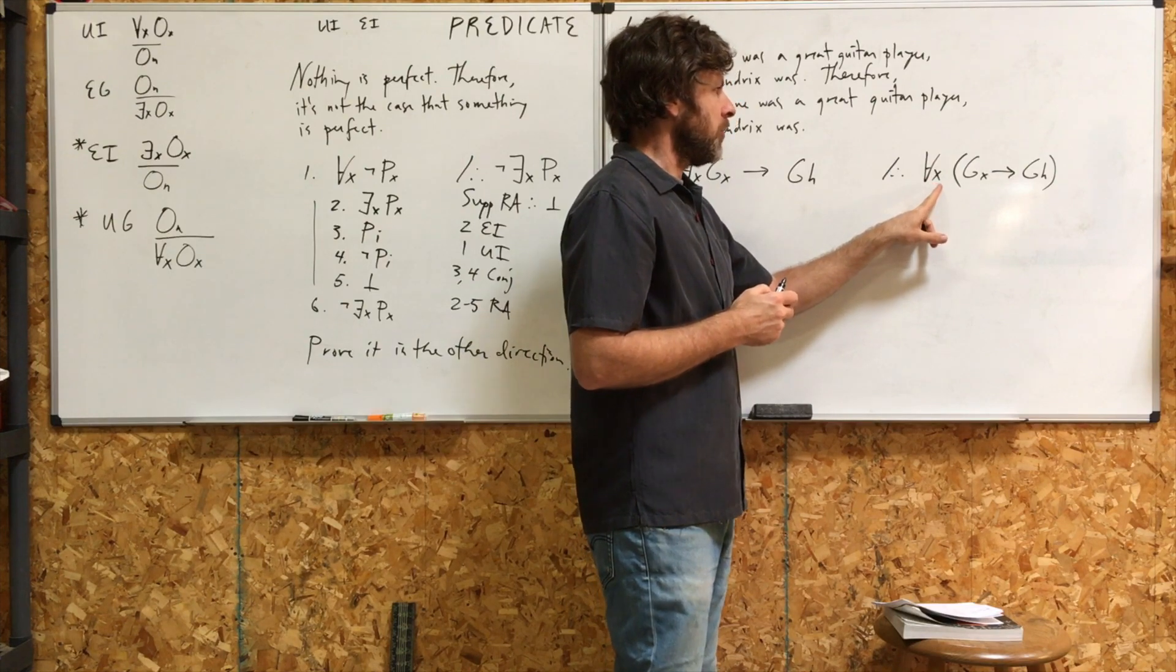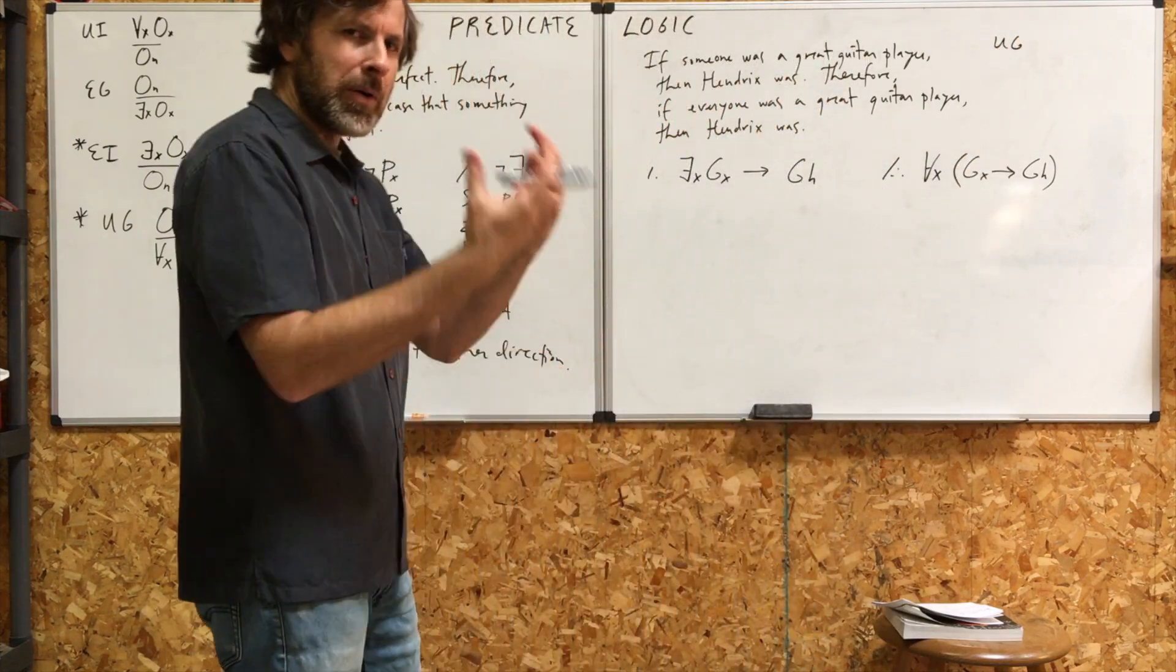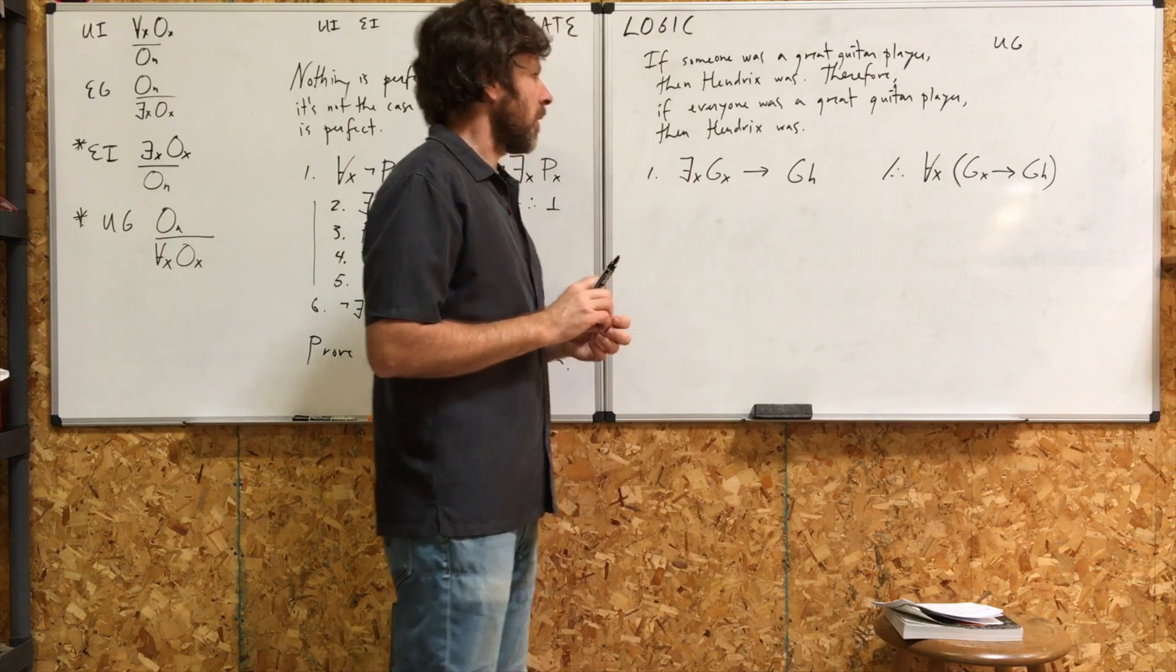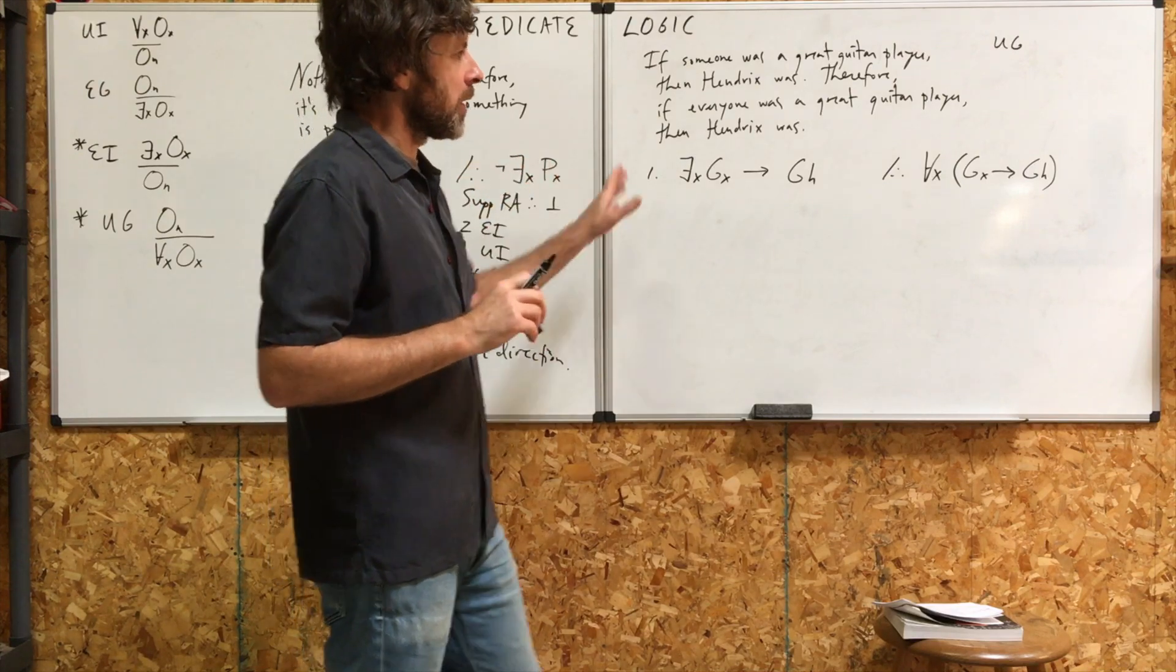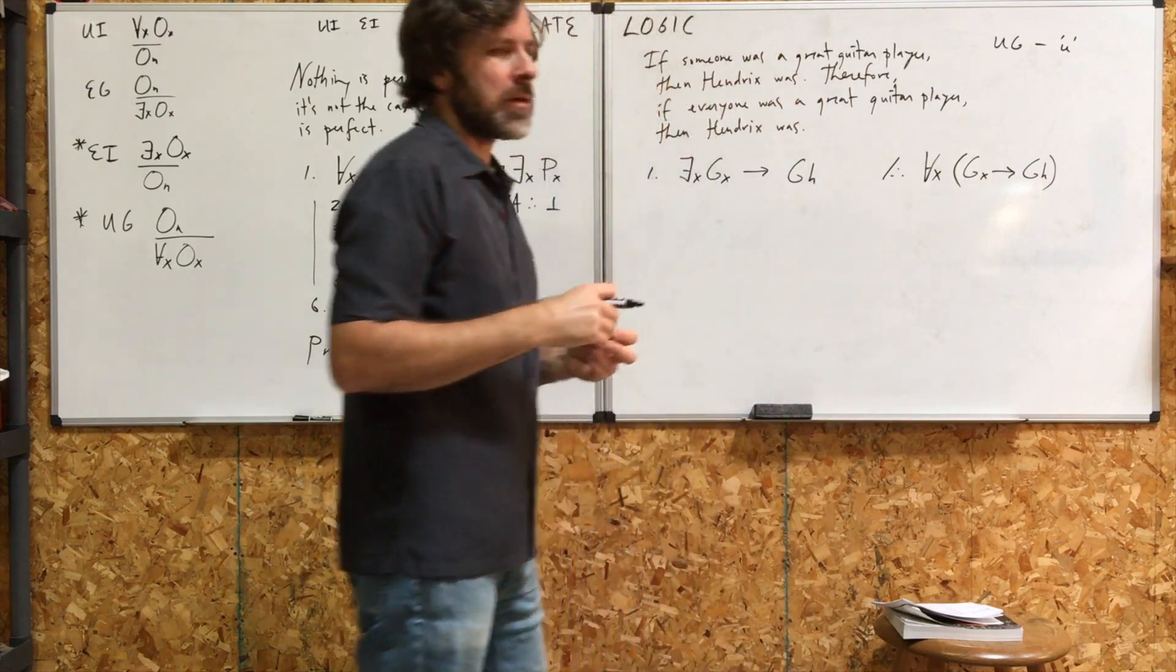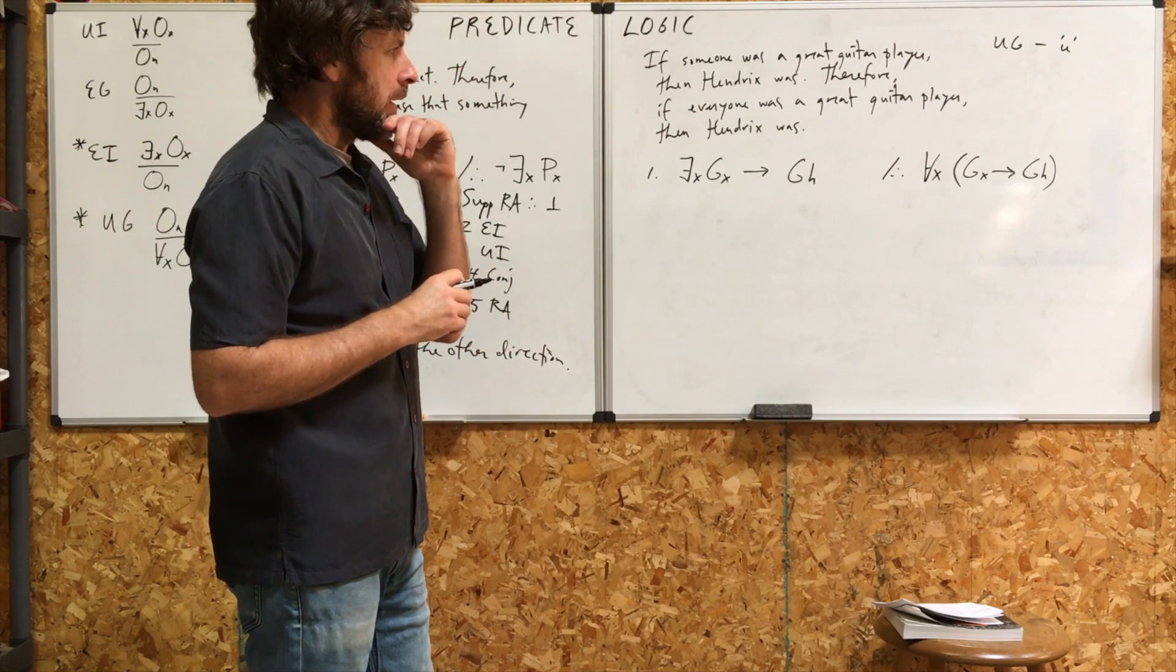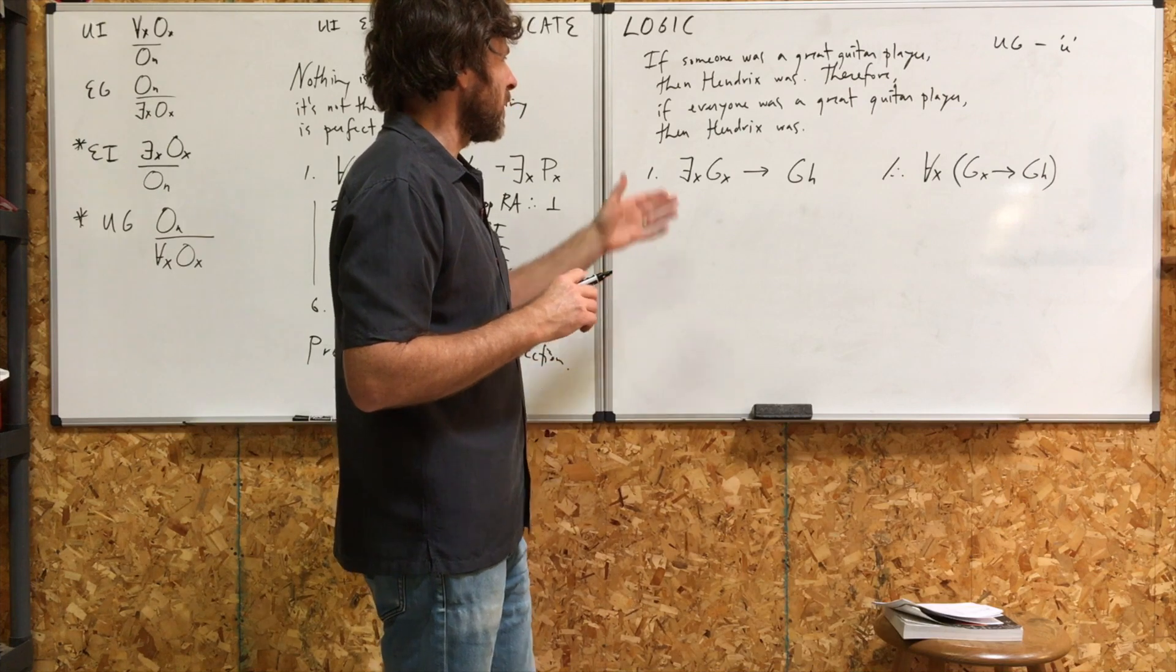Now, we're going to have to use UG at some point in this proof in order to get our conclusion, in order to put back or put on a universal quantifier. So, we're going to need to use UG. Do we need to use another rule? Well, probably so. Or maybe not. We don't know quite yet. But right now, it looks like all we really know for sure is that we need to use UG. Now, if that's the case, we're going to need to use little u. That's our arbitrary individual that we use, or the name we use when we use UG. Another thing to keep in mind here, what is our strategy here? If we use reductio, that doesn't make things easier.